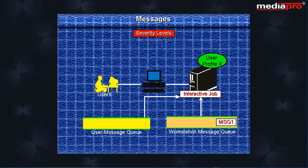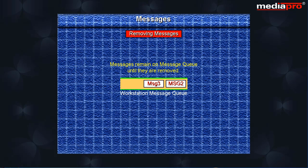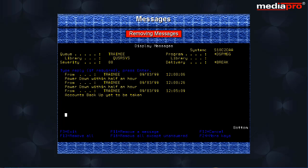Once a message queue has been allocated to a particular job, only that job can remove messages from the queue. Other users may be allowed to view or respond to messages on this message queue. When the user signs off, both the message queues are automatically deallocated from the job and set to star hold delivery mode. Any messages that arrive on either of the message queues when a user is not signed on are put on the message queue. All messages remain on the message queue until they are removed. You can use the work with messages command to remove the messages.